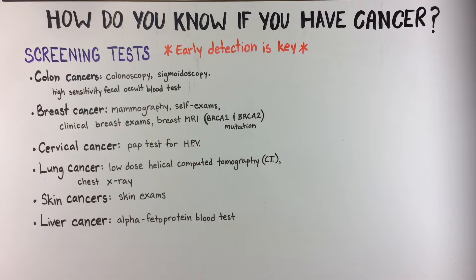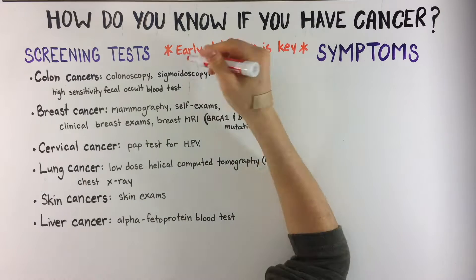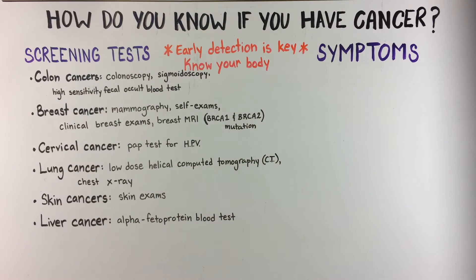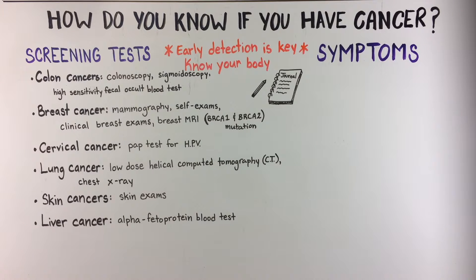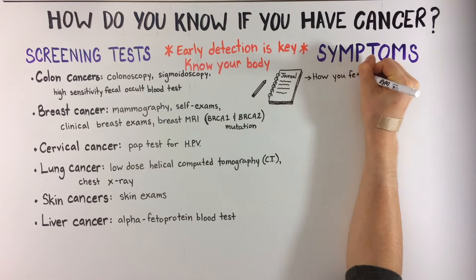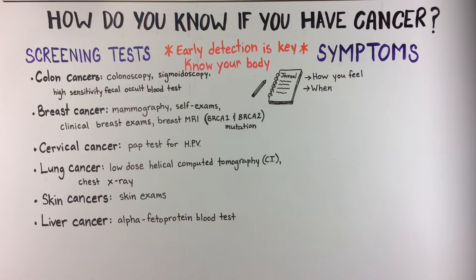Different types of cancer affect different parts of your body and can show different symptoms. Some can be subtle, and some cancers may show no symptoms at all until they are well advanced. The key is to know your body and learn to be observant and aware of unusual symptoms, especially when they do not go away. Start a journal and record in detail how you feel and when, as such information is essential for many decisions to come.